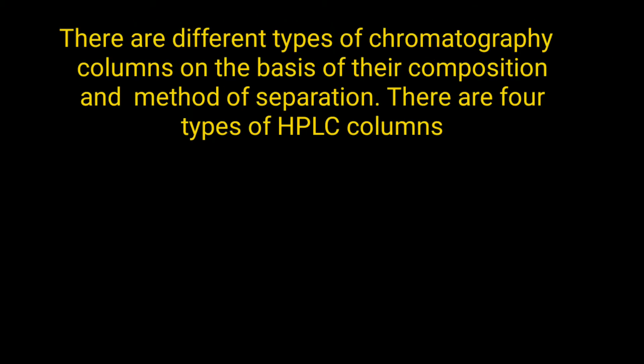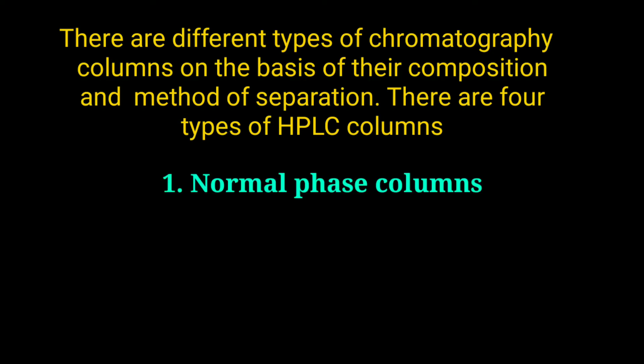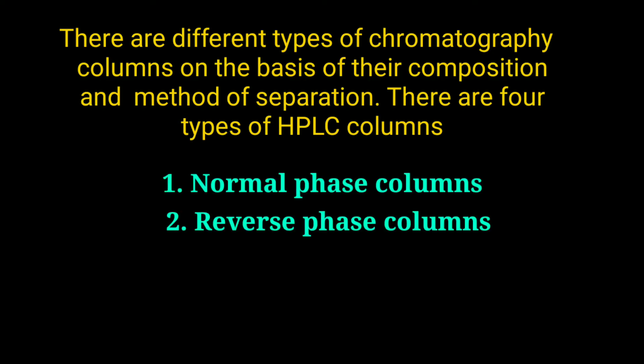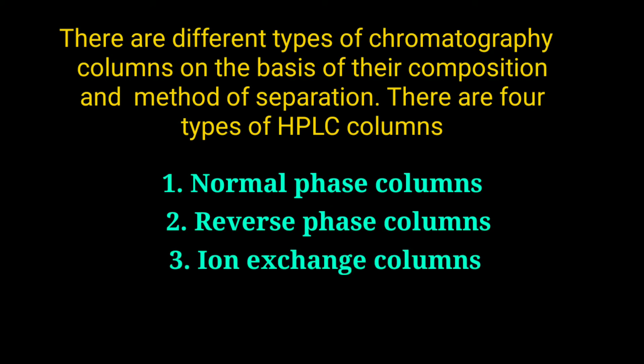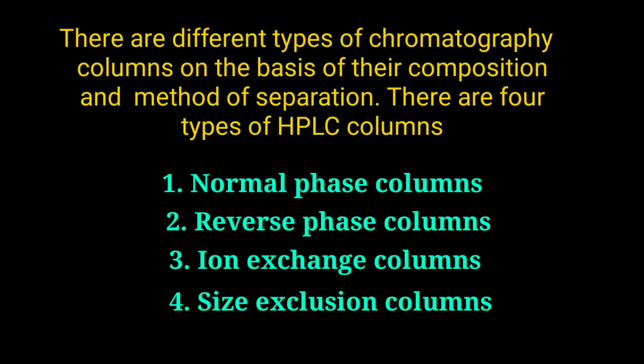There are different types of chromatography columns on the basis of their composition and method of separation. There are four types of columns: number one, normal phase columns; number two, reverse phase columns; number three, ion exchange columns; and number four, size exclusion columns.